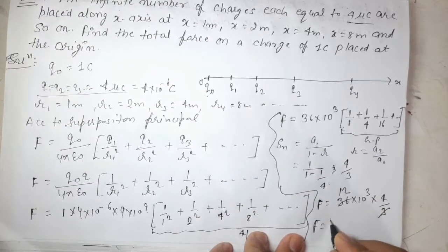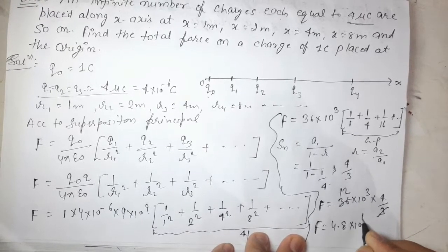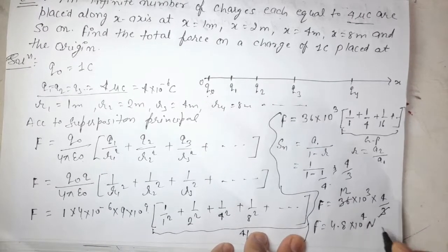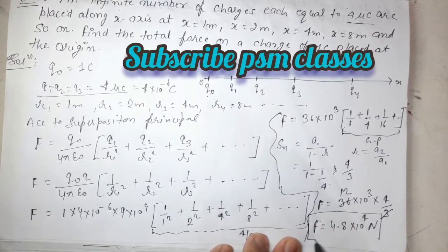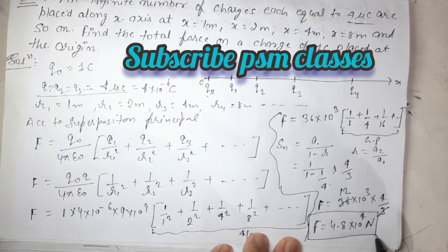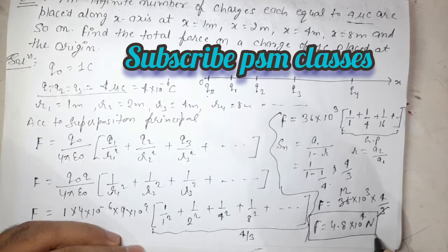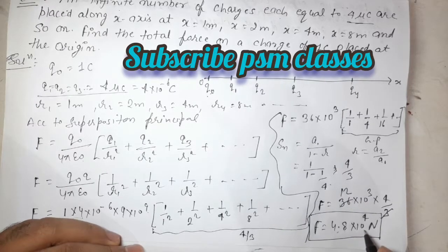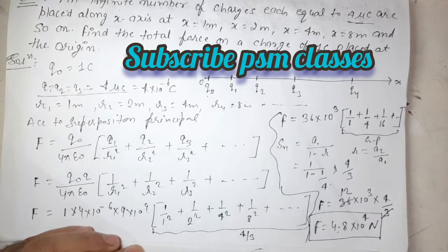So F = 4.8 × 10⁴ Newton. This is the net force on Q0 due to the infinite number of charges. Thanks to all of you — have a nice day!